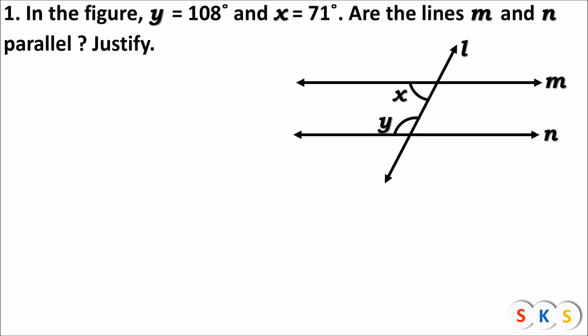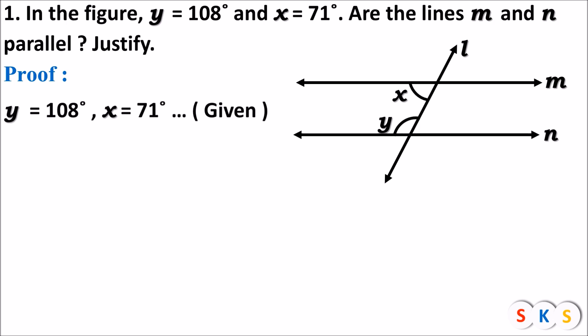Here we have question number one. In the figure, y equals 108 degrees and x equals 71 degrees. Are the lines m and n parallel? Let's see the proof. It is given that y equals 108 degrees and x equals 71 degrees. Look at this figure — x and y are interior angles. If the sum of these two angles is 180 degrees, meaning if the interior angles are supplementary, then the lines are parallel. So we are going to find the sum of angle x and angle y.